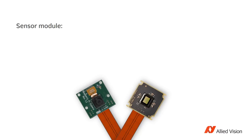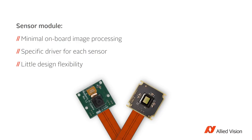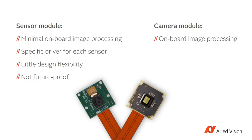To summarize: a sensor module has extremely limited onboard image processing, which means your host processor needs to perform most of the image correction tasks. Each sensor module has its own driver, which makes it quite inflexible for design changes. Also, if new and better sensors become available in the future, you will have to integrate the new sensor from scratch. With the camera module, image correction and optimization tasks are performed onboard the camera, which frees up CPU capacity on the host side. One driver for the whole platform means you can easily switch between different sensors.